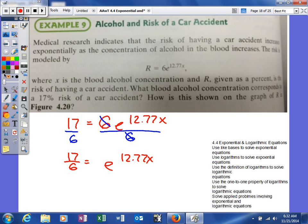Next, we're going to take the natural log of both sides. The reason we do that is it will cancel with the e. So we're left with ln(17/6) = 12.77x.